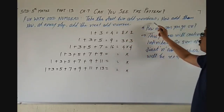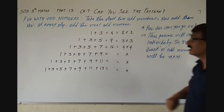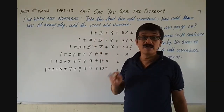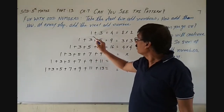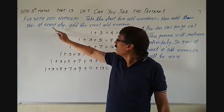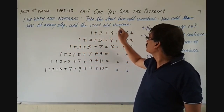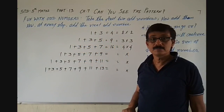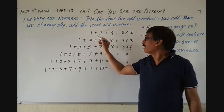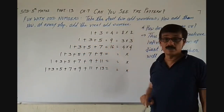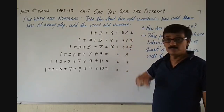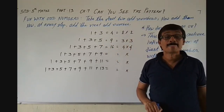Take the first 2 odd numbers and add them. At every step, add the next odd number. So, 1 plus 3 is equal to 4. But 4 is equal to 2 multiplied by 2.